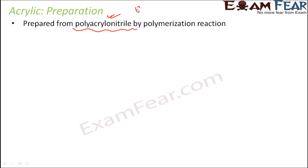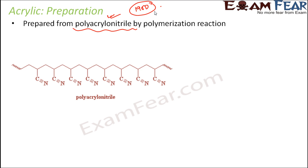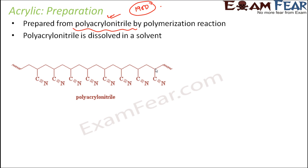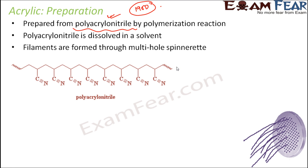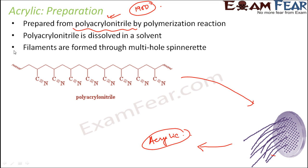Polyacrylonitrile is a polymer with about 900 monomer units joined together by bonds. This polyacrylonitrile is dissolved in a solvent and then the filaments are forced out through a multi-hole spinneret. The filaments which come out are in viscous form and are then solidified to form acrylic.